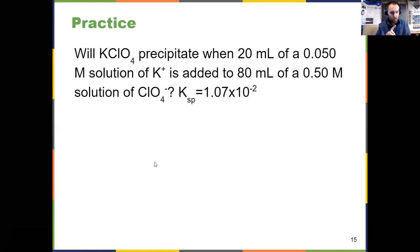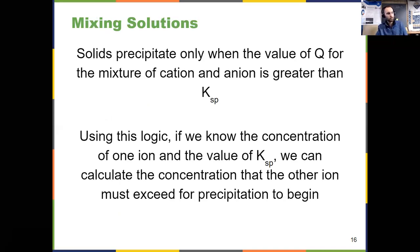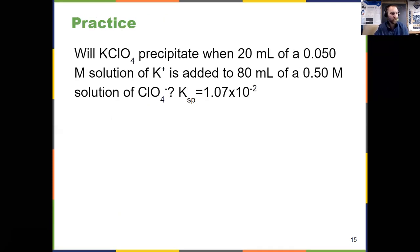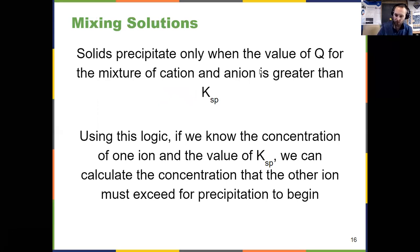So write the expression, solve for Q, compare to K to determine if something will precipitate. This slide is verbally just telling us what we've already talked about. Solids will only precipitate when the value of Q, when they're mixed together, exceeds the value of K. And one other thing I want to jump back to slide 15 here. Make sure you account for the volume change when these things are mixed together when you're solving for the new molarities. And your M1V1 equals M2V2 from way back in Chapter 3.